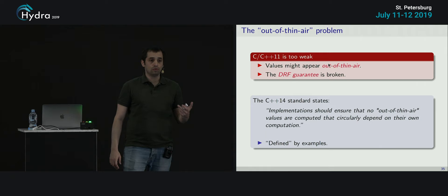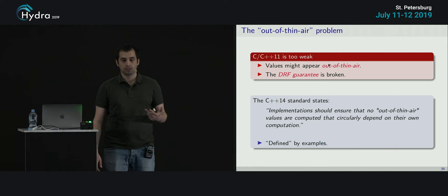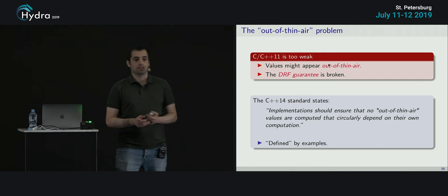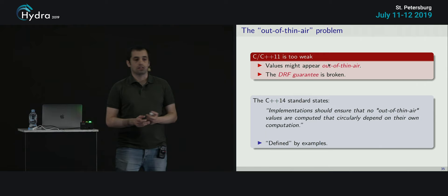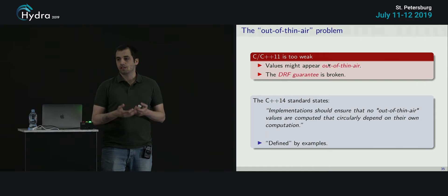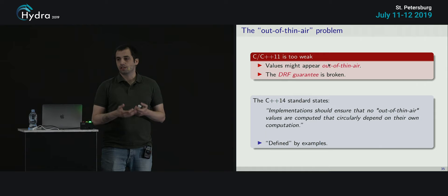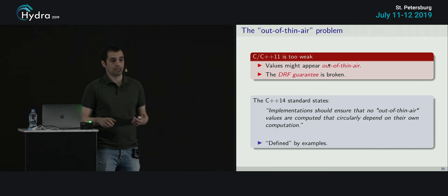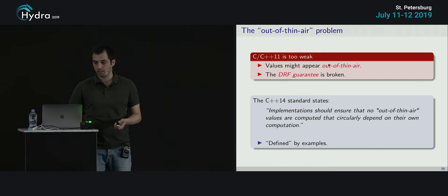To summarize: C++ and C11 is too weak — values appear out of thin air, and the DRF theorem is broken. They identified this problem and added a vague remark in C++14 that implementations should ensure no out-of-thin-air values are computed. But there is no good formal definition of what this means. What we saw is that with the idea of programs mapped to execution graphs, it is impossible to get this right. This is the current status.